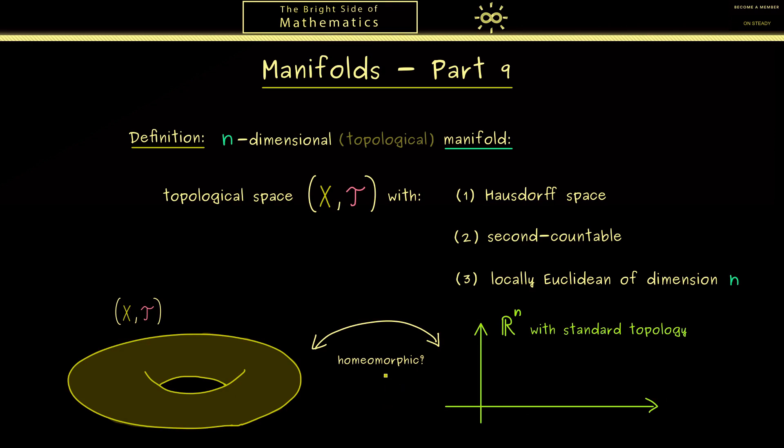Or to say it more precisely, this means when we fix a point here on the left-hand side, we can zoom in such that it looks like R^2.